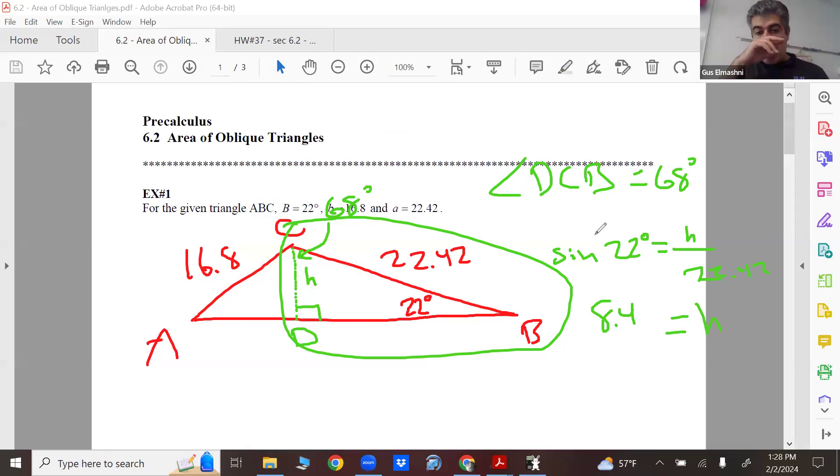So you got the height, okay cool. Now we need to figure out the base. I could do it, shouldn't be too bad. Okay, so this is 8.4 right. So you got 8.4, 22.42, 8.4, 16.8. Okay, and we'll call this x and y.